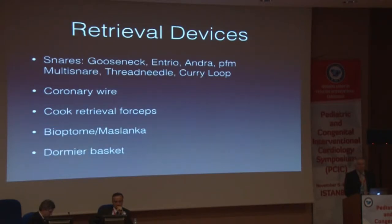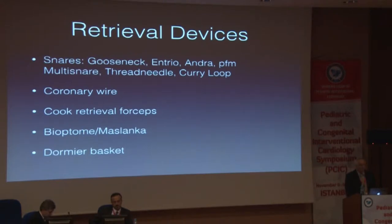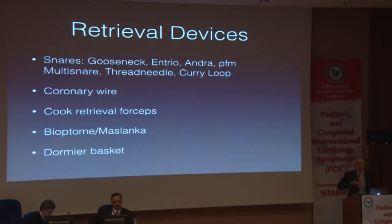As far as the devices, there are numerous, and I think it's important to familiarize yourself with a number of them. The commonest by far is the gooseneck and the Ensnare snares, but there are a lot of others as well. If you have no devices on the shelf at the time, and particularly if you need to cover something quite large, using a long corny wire is very helpful. You use a 260-long wire, you bend it at the center, put it through a guide catheter, and that can act as a very good snare.